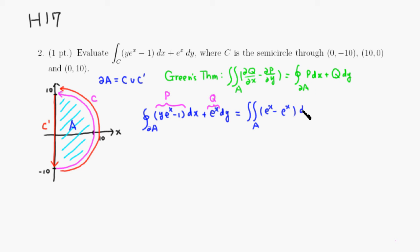So this is dx dy. Actually I forgot to put that in there, dx dy. So this is actually equal to zero because here e to the x minus e to the x is zero, so the integral is going to be zero.